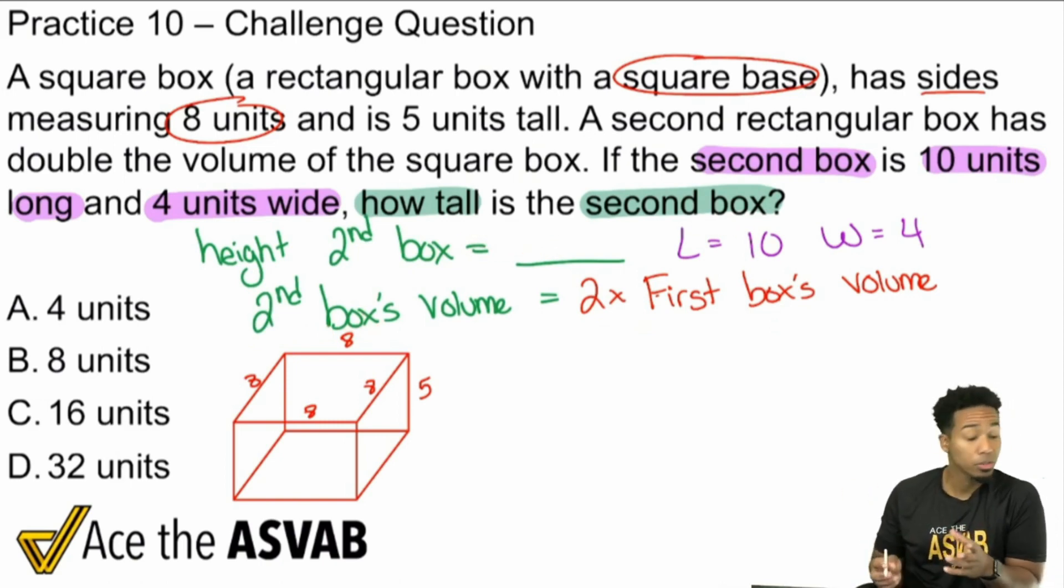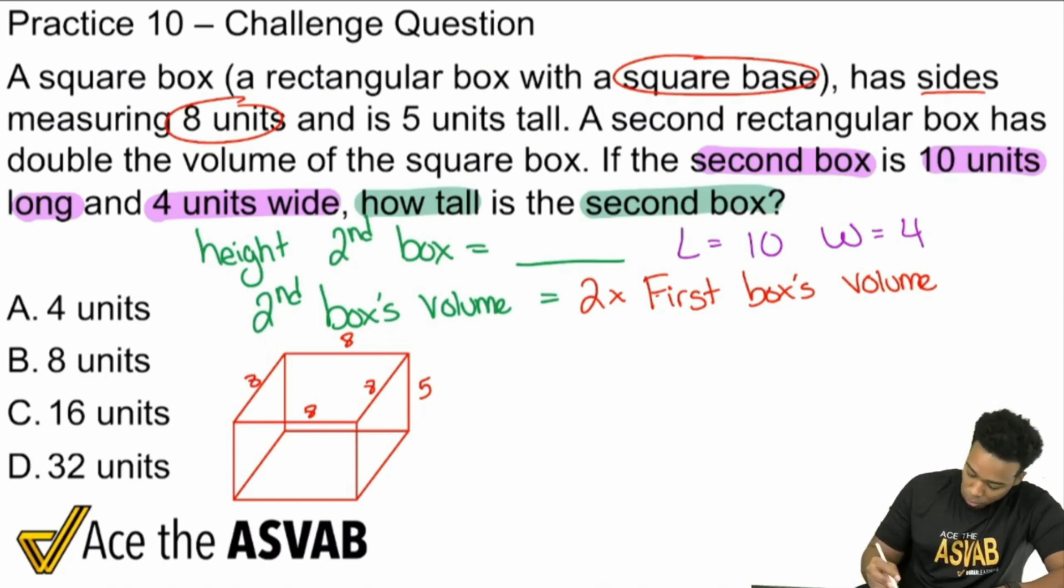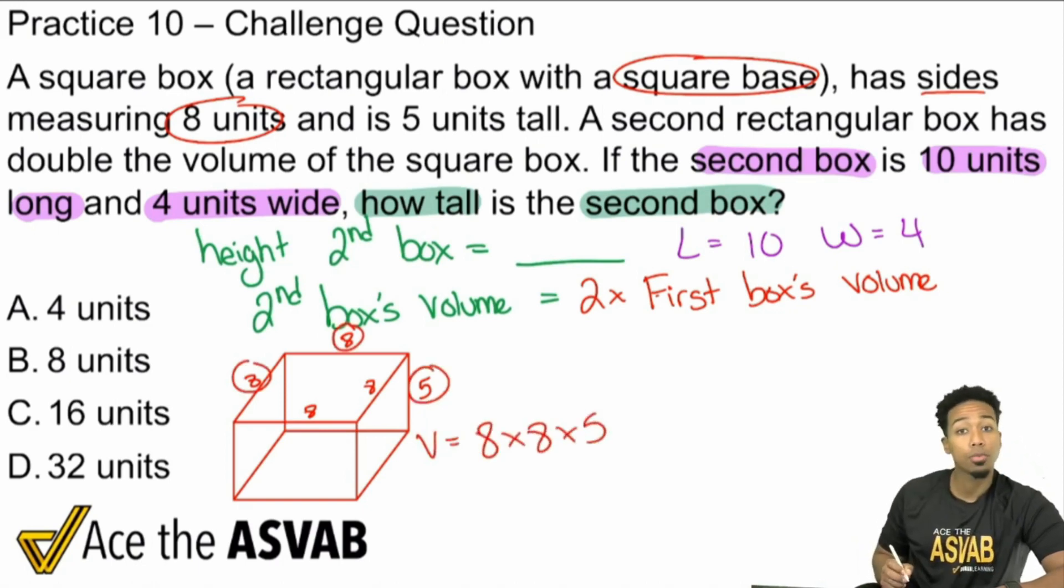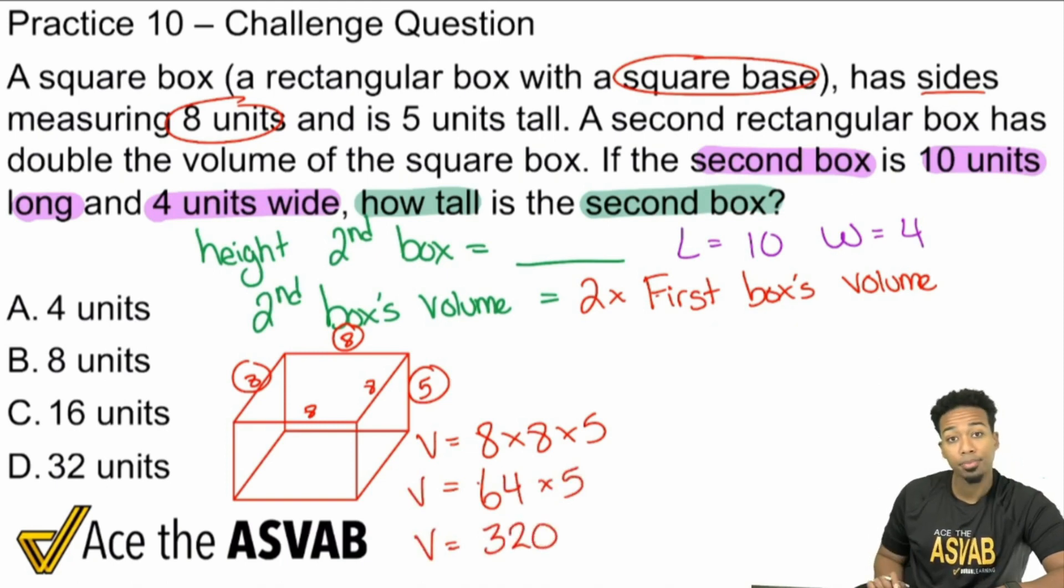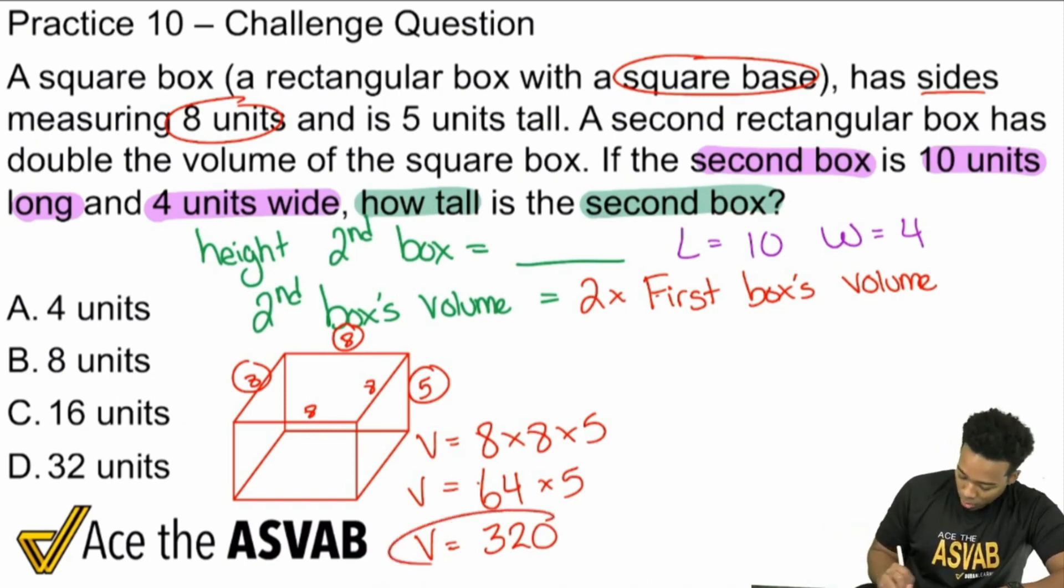This is going to be pretty straightforward because the volume of the first box is going to be equal to the length times the width times the height. 8 times 8 times 5. And so from there, we'll go ahead and solve this. 8 times 8 is going to be 64. 64 times 5, what's that going to give us? That's going to be 320. So I know that because multiplying by 5 is the same thing as multiplying by 10, then cutting it in half. Half of 10 is 5. So times 10, cut in half. Boom.